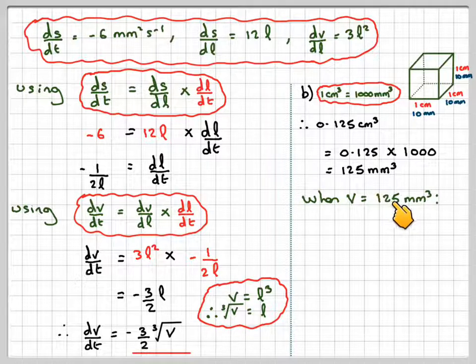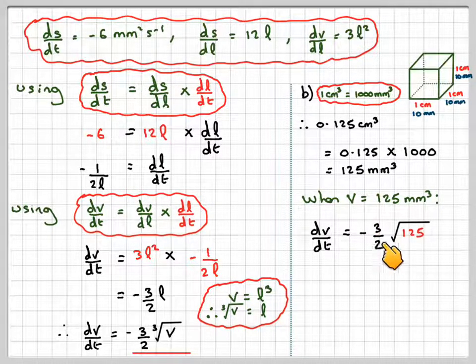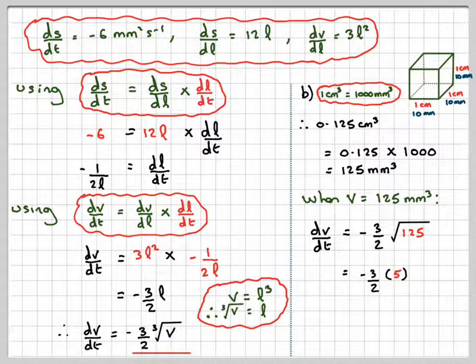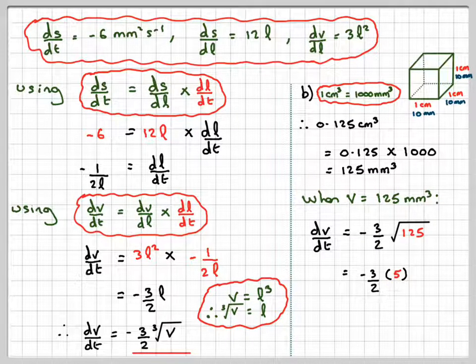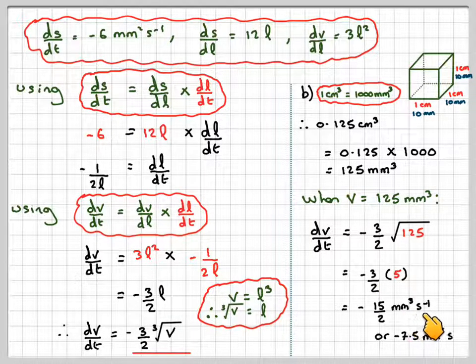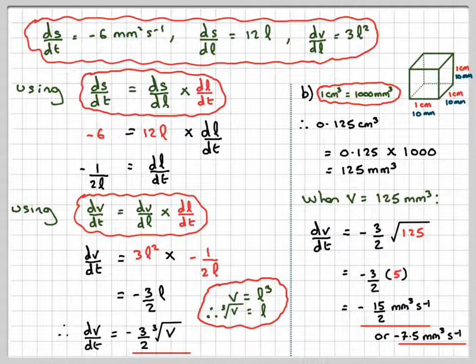When V equals 125mm cubed, we have that dv by dt is minus 3 over 2 times the cube root of 125, which is minus 3 over 2 times 5, which is minus 15 over 2 millimeters cubed per second, or minus 7.5 millimeters cubed per second.